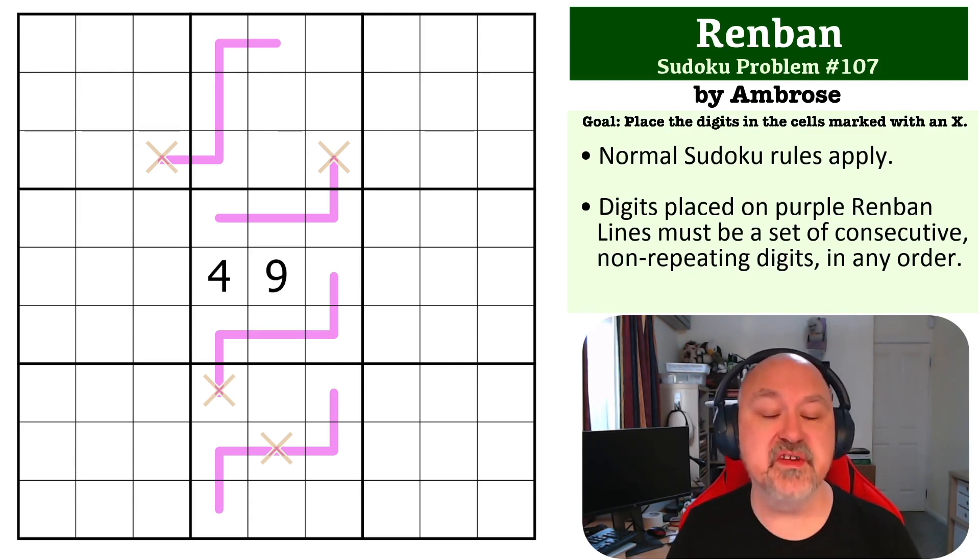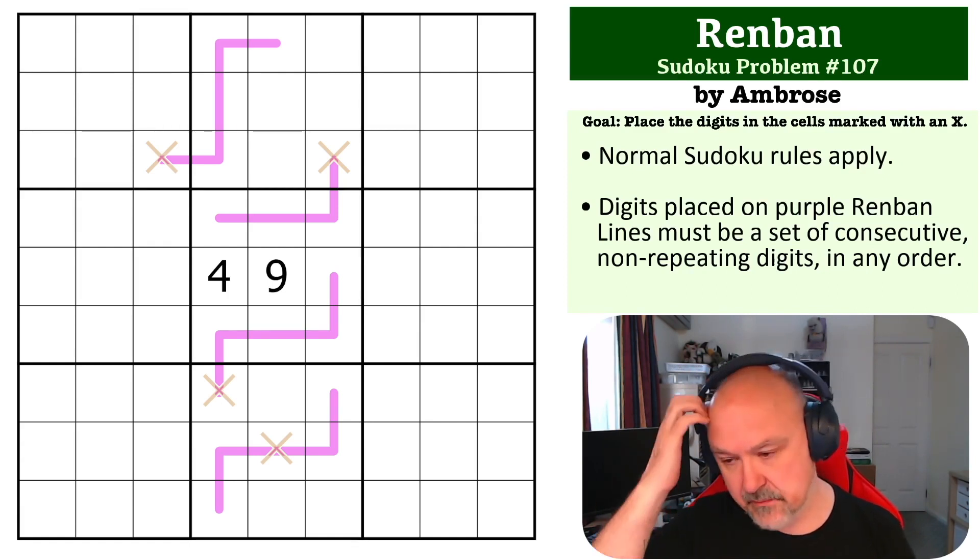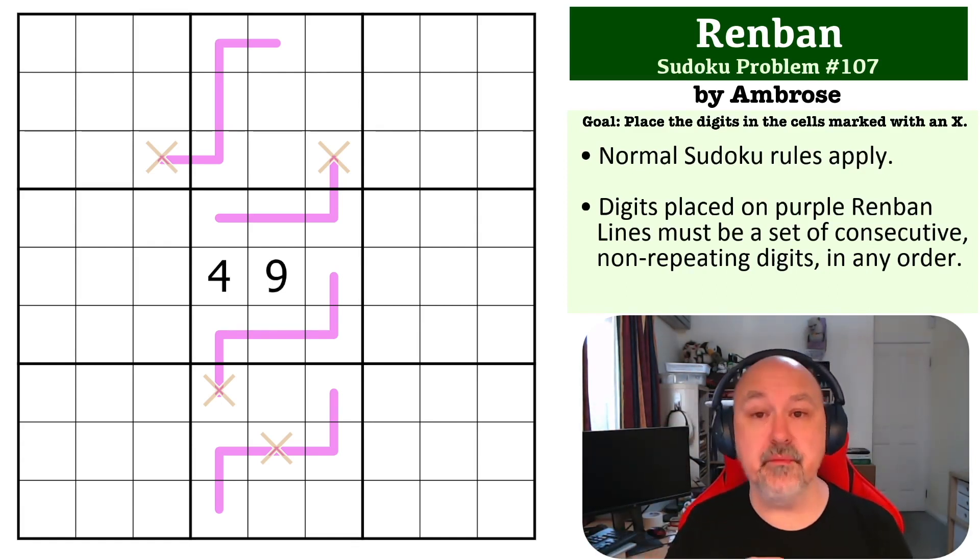So the goal on this one is to place the digits in the cells marked with an X. You don't need to worry about placing any others. And the way Renban lines work is they must contain a set of consecutive non-repeating digits in any order. So if you were to figure out a digit on a line, all of the others must be consecutive with it, but they don't have to be in sequence. They could be jumbled up. So if you were to take them off and sort them, then they will be a run of digits in order.